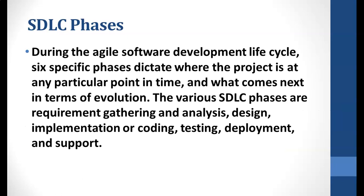During the agile software development lifecycle — taking it as an example — there are six specific phases that dictate where the product is at any particular point in time and what comes next in terms of evolution. The various software development lifecycle phases are: requirement gathering, analysis, design, implementation, coding, testing, deployment, and support.